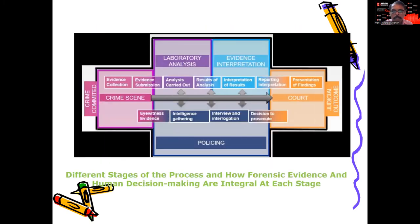In forensic science, the process flows from: crime committed, evidence collected, evidence submission, personal investigation, analysis carried out in laboratory, evidence interpretation, reporting, and presentation of findings in court. The police do eyewitness evidence, intelligence gathering, interview, interrogation, and the decision to prosecute, leading to the judicial outcome. These are the different stages of the process and how forensic evidence and human decision-making are integral at each stage.